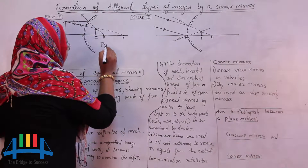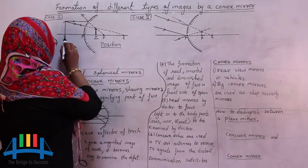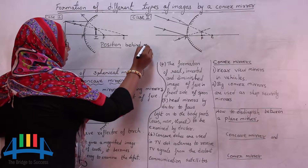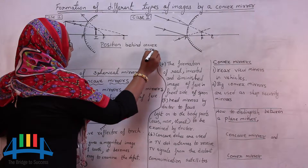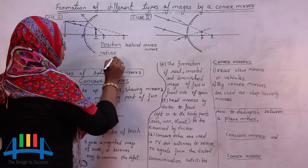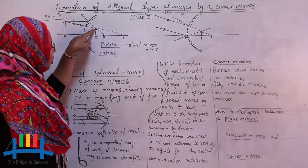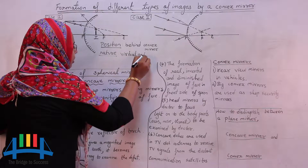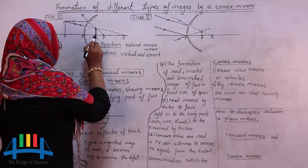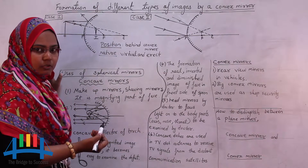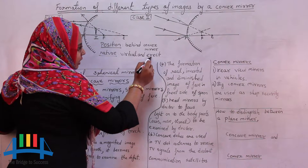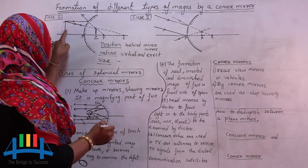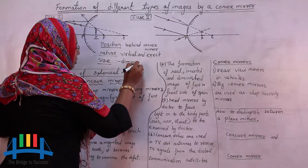Looking at the characteristics of the image: the object is placed in front of the convex mirror, and the position of the image is behind the convex mirror. The nature of the image is virtual and erect — virtual because the reflected rays are not actually meeting but appear to meet, and erect because the image is formed above the principal axis. The size of the image is smaller than the object, so it is a diminished image.